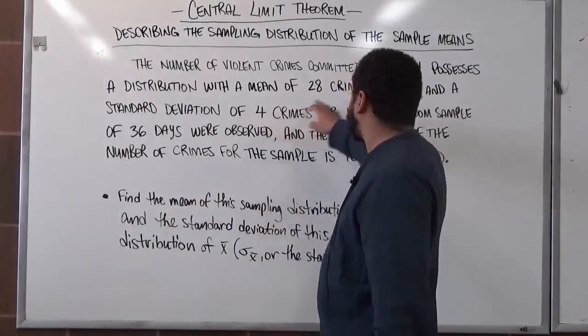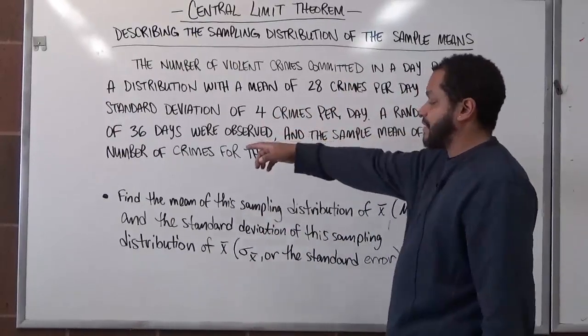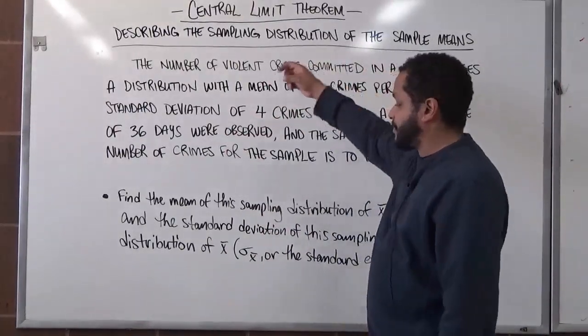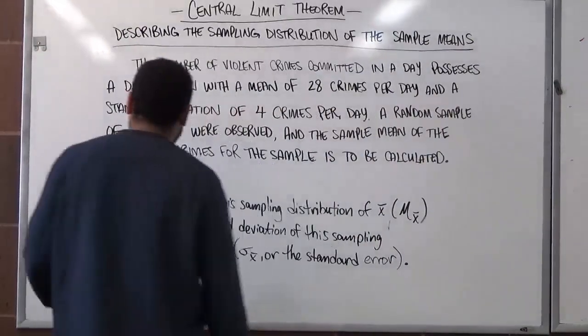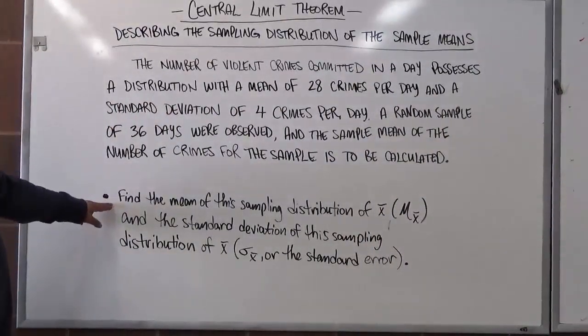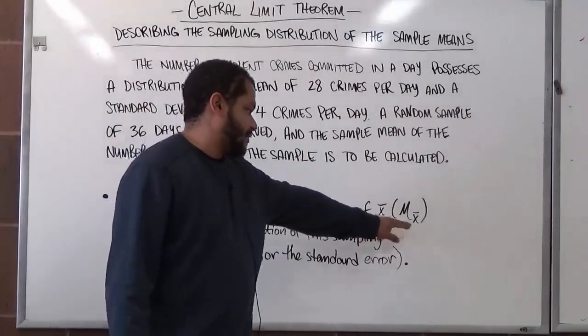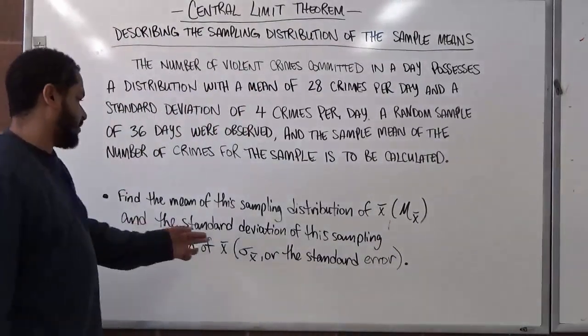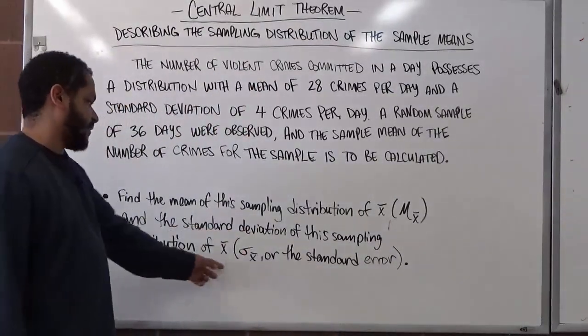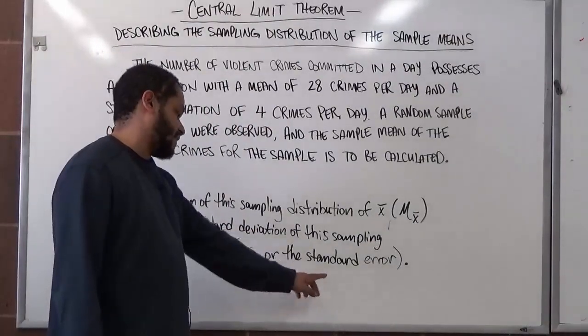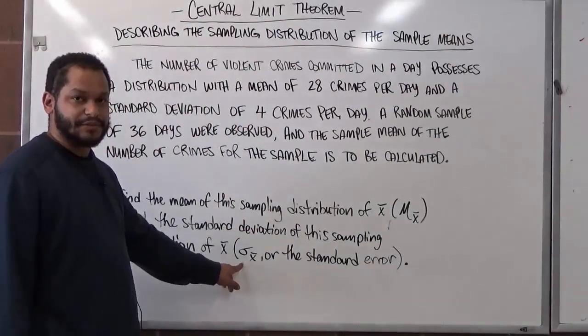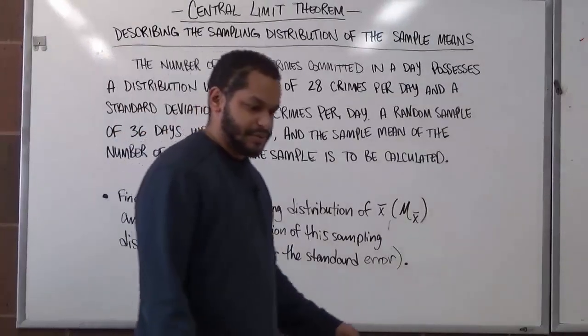We also see the averages are per day and we have 36 days to account for them. And because of this, we're using the sample means for the sampling distribution. Our case here is to find the mean of the sampling distribution of x bar, which is μ of x bar, and the standard deviation of the sampling distribution of x bar, which is also known as the standard error, which we subscript as σ with a subscript of x bar.